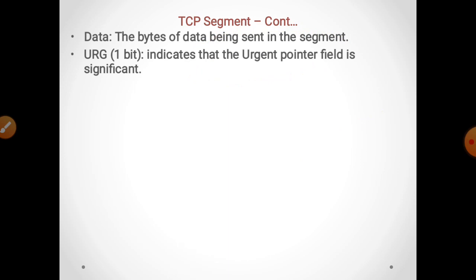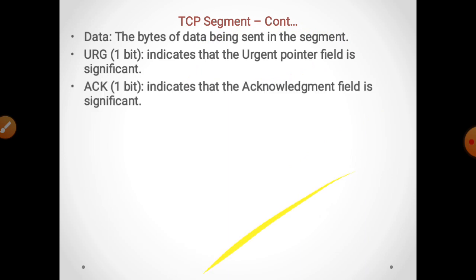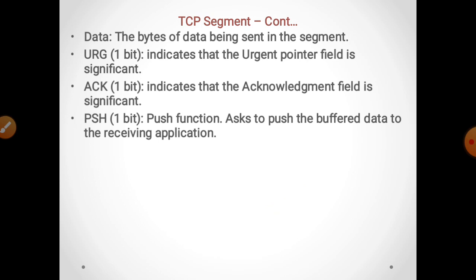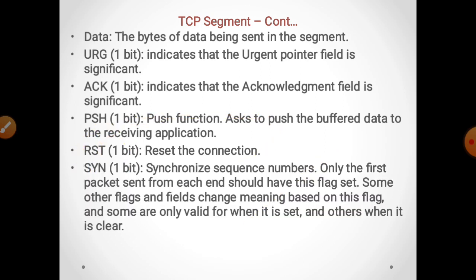URG is 1 bit — it indicates that the urgent pointer field is significant. ACK is 1 bit — the acknowledgement field is significant. PSH is 1 bit — the push function asks to push the buffered data to the receiving application. RST is 1 bit — reset. SYN is used to synchronize sequence numbers.